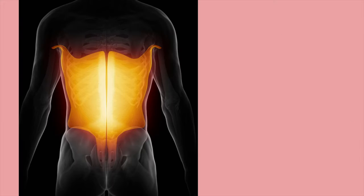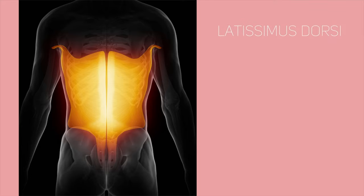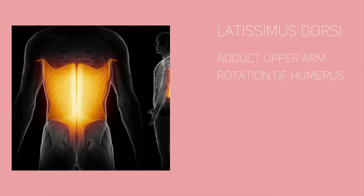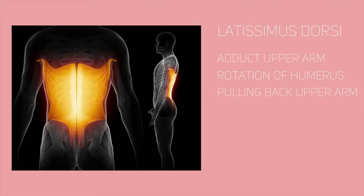The other extensor muscle is the latissimus dorsi, a wide triangular-shaped muscle arising from the lower back, going around the axilla region, and finishing in the armpit. It extends to adduct the upper arm and causes rotation of the humerus bone. Its action entails pulling back the upper arm during exercises such as climbing, rowing, and swimming.